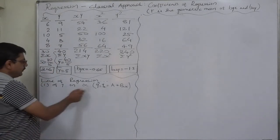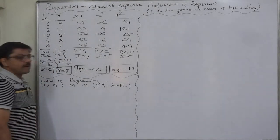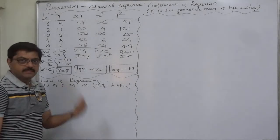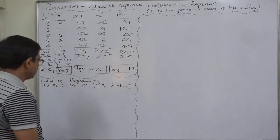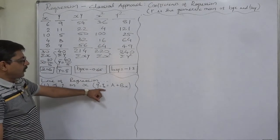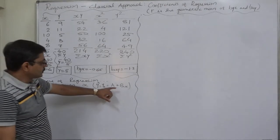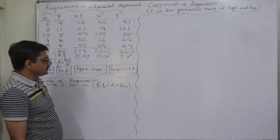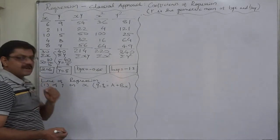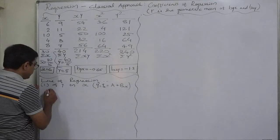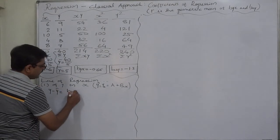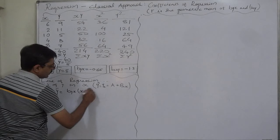The first is the line of regression of y on x, meaning y is the dependent variable and x is the independent variable. The standard form is y-cap, or y-estimated, equals a plus bx. The classical formula is: y minus y-bar equals b_yx times x minus x-bar.